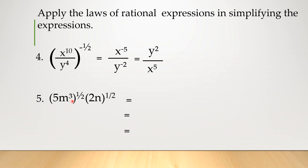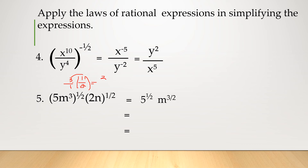Now here, we have 5m cubed raised to 1 half, times 2n raised to 1 half. You could convert these to radical form right away to simplify, but this time we're applying the laws of exponents. So we distribute the outside exponent: 5 is raised to 1 half, and m gets exponent 3 times 1 over 1 times 2, that is 3 halves. For the second factor: 2 is raised to 1 half, and n is also raised to 1 half.